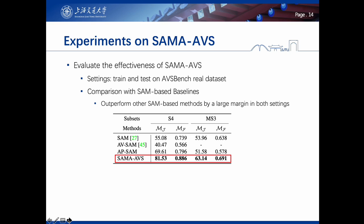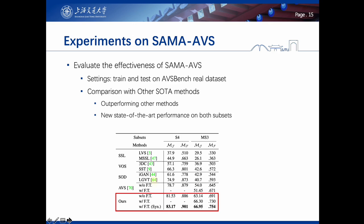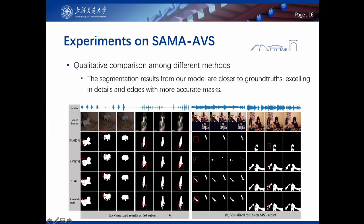In the second part of the experiment, we evaluate the effectiveness of the proposed SAMA-AVS model, trained and evaluated on the AVS bench real dataset. The results show that our method not only outperforms other SAM-based methods by a large margin in both settings, but also outperforms other state-of-the-art methods by establishing new state-of-the-art performance. Additionally, pre-training the model with our synthetic data further enhances performance. Qualitative comparisons show that our model's segmentation results are closer to ground truths, excelling in details and edges.